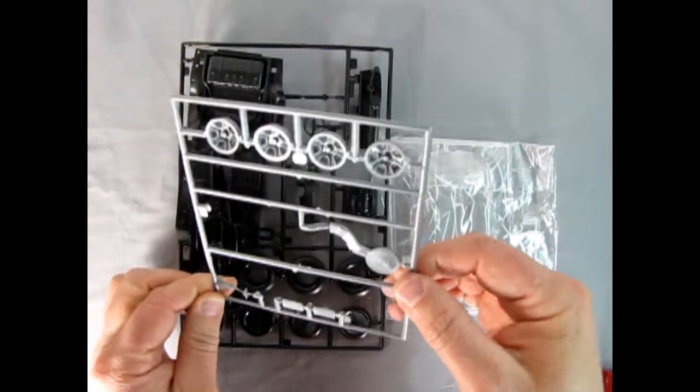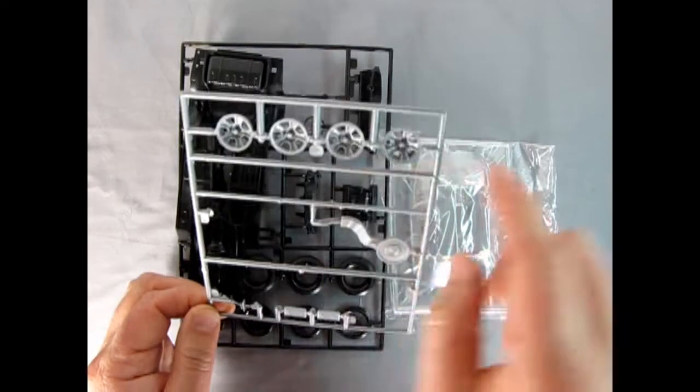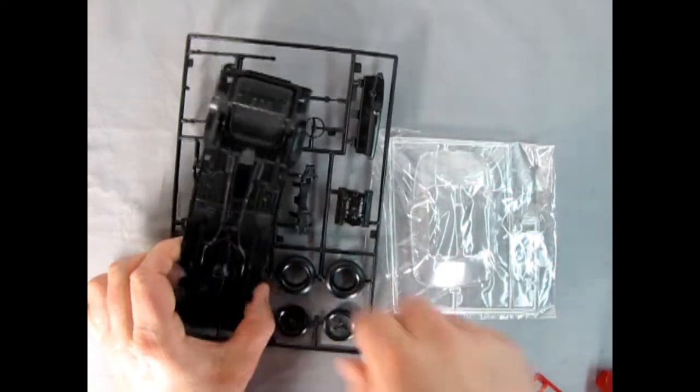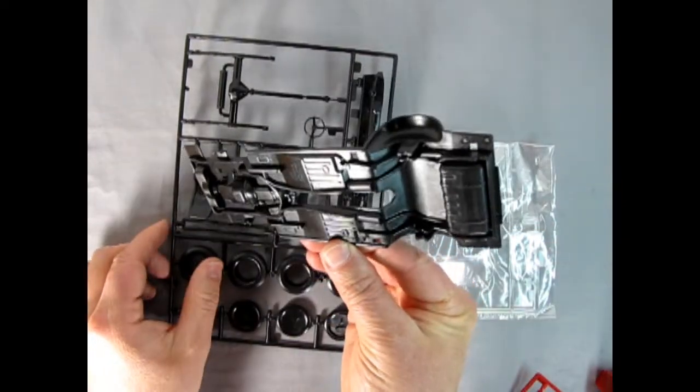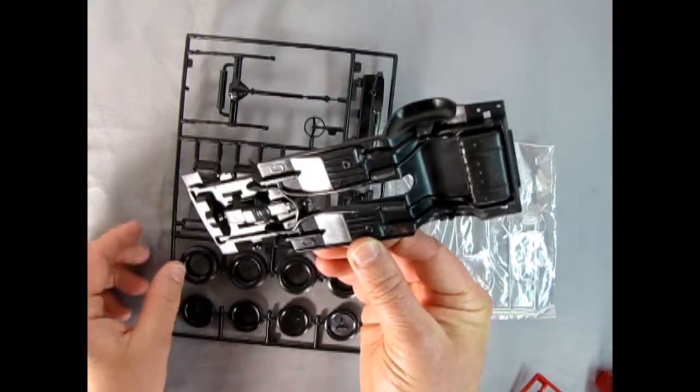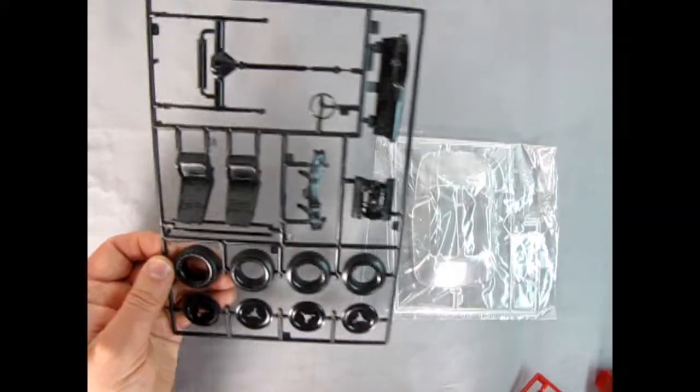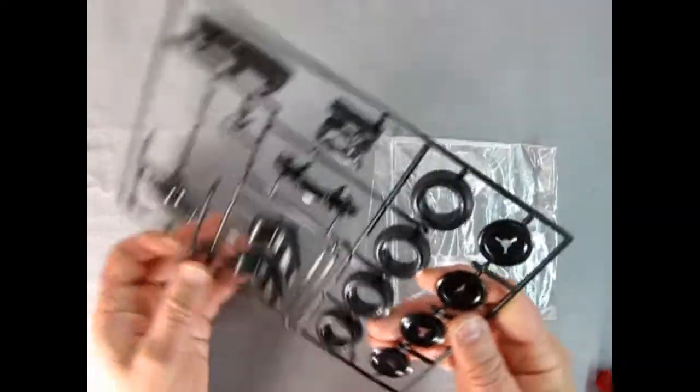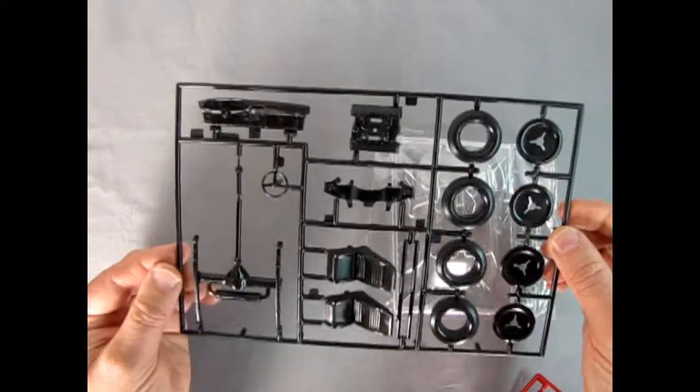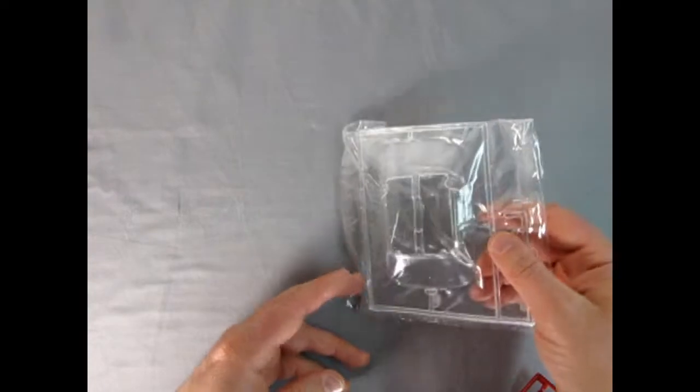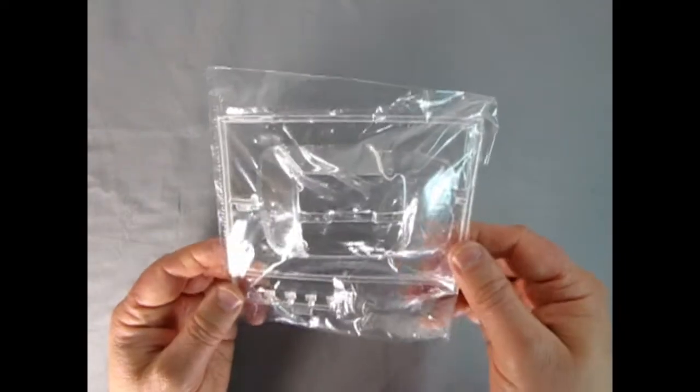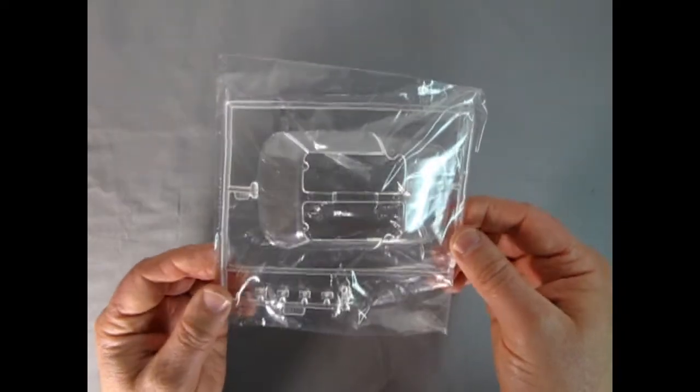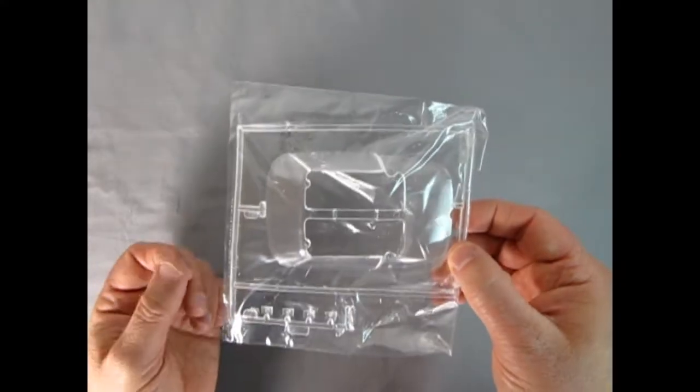There's our interior tub bucket. Again, I do believe this is shared with the Camaro. There we've got our front wheels, nice looking Pontiac style wheels right there. There's our chassis pan with all the different mufflers and things molded into place. And then we've got the rear axle and dashboard.